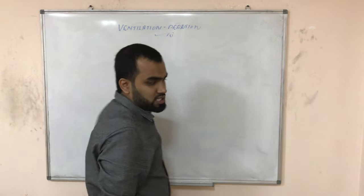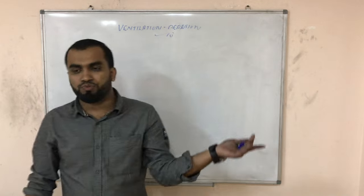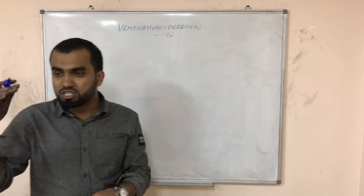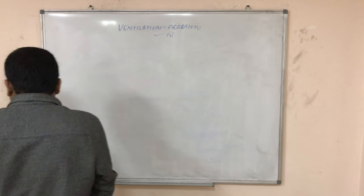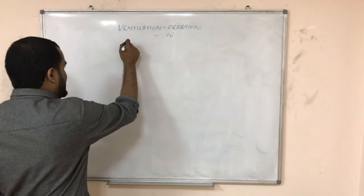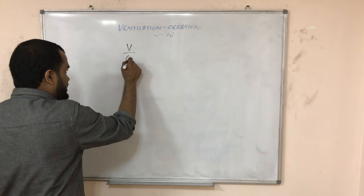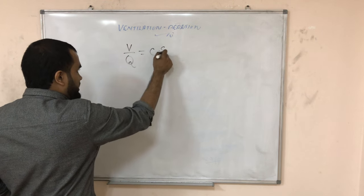Exchange of gas from alveoli to the atmosphere is ventilation. Perfusion means exchange of gas between blood capillaries and alveoli. Normally it is represented by V for ventilation and Q for perfusion. The ratio is normally 0.8.